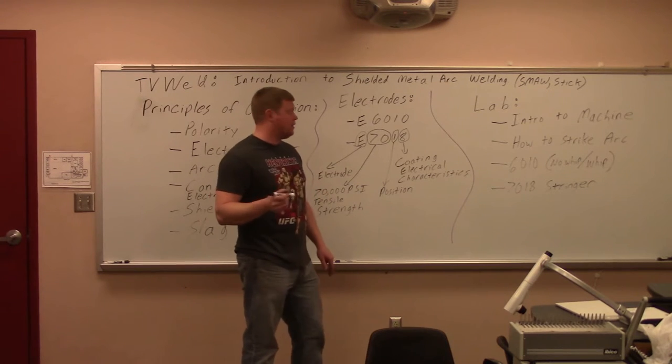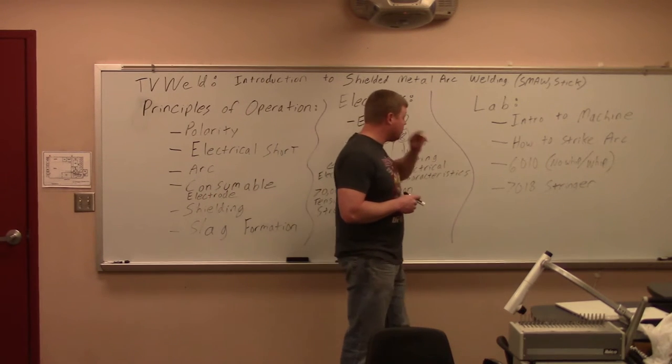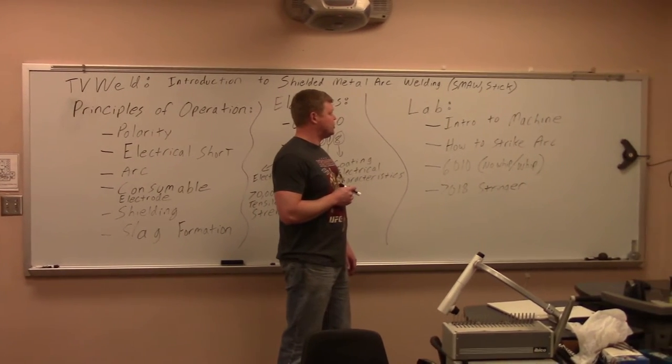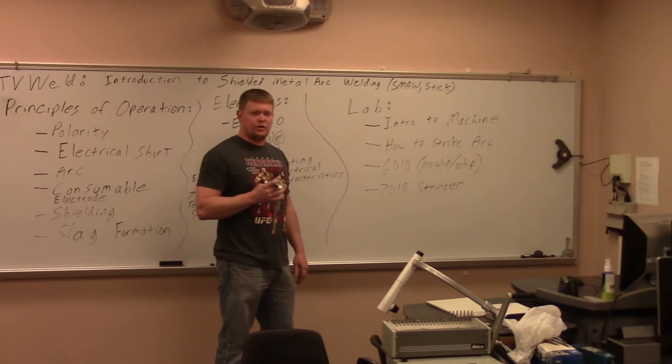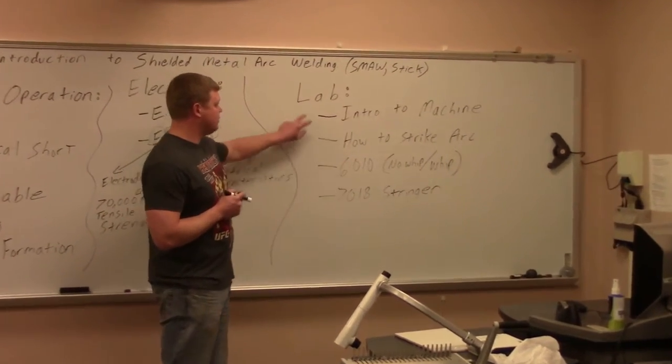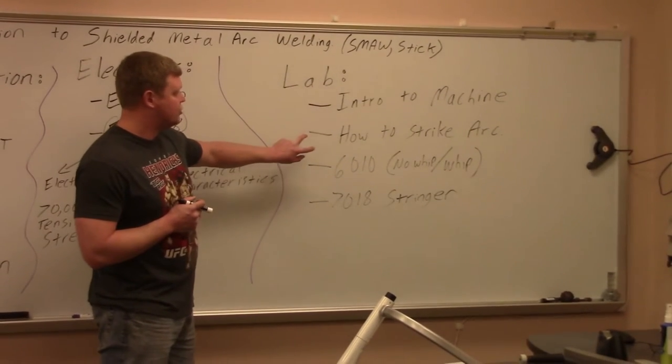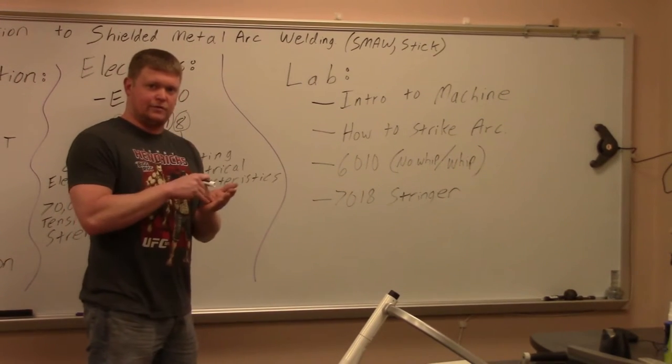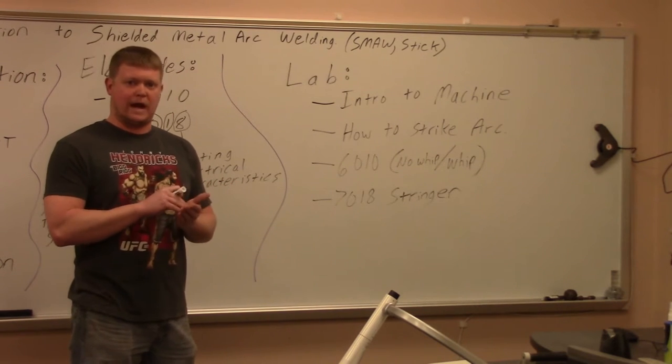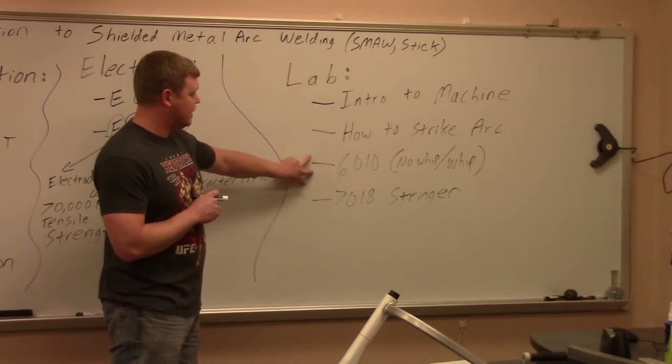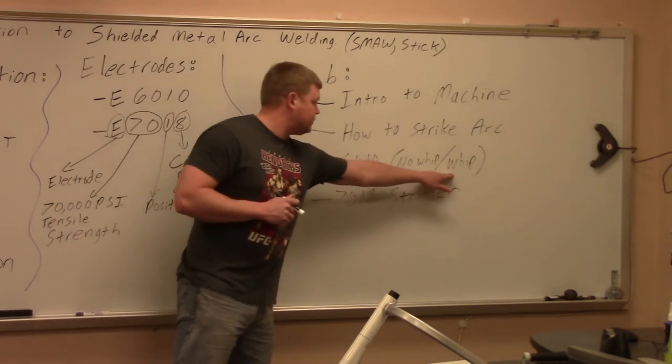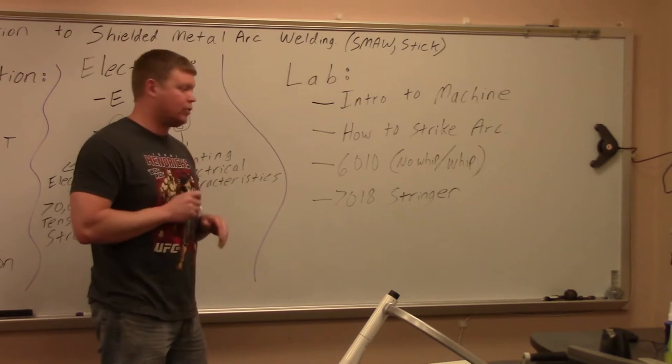Now what we're going to show you in the lab here is we're going to start with an intro to the machine. We're going to show you how to set up the machine, show you the stuff that's on the machine that is associated with stick welding because it will also do TIG welding, they're usually combos. So we're going to show you how to set up the machine, then we're going to show you how to strike an arc. You have to physically touch the plate, so you have to give it a little scratch. People always compare it to starting a match. Then we're going to go into a 6010 rod, and we're going to do it without a whip, and then we're going to do it with a whip. So you kind of float back and forth in the puddle when you're doing a whip.